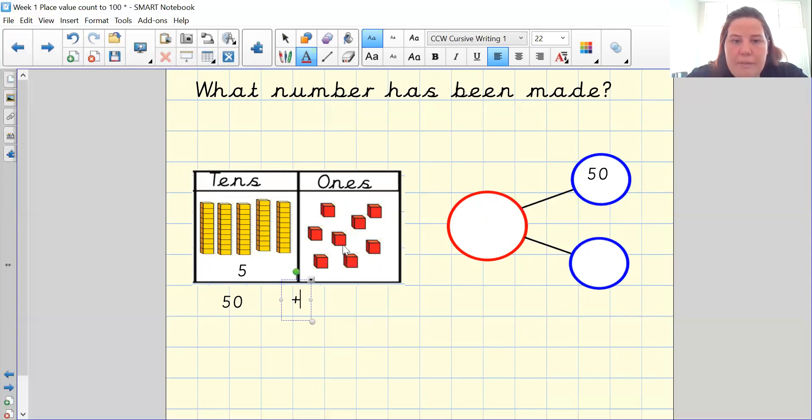One, two, three, four, five, six, seven, eight. So I'm going to add eight ones. So I'm going to put my eight in. So that means I have made 58.